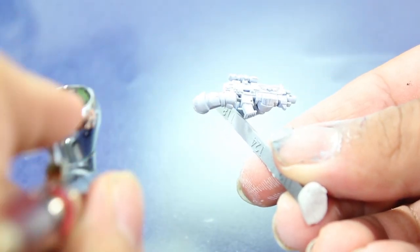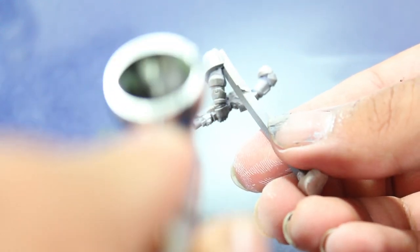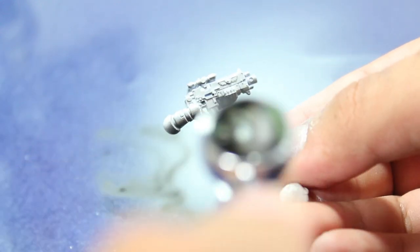Once the model was primed, I went in with a Vallejo Airbrush Black, and I used that to shade all of the undersides of each piece of the model, and this is going to be a pre-shading for the rest of the effects.